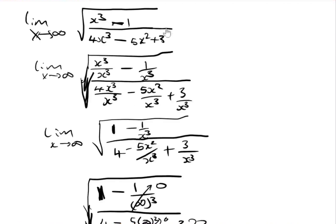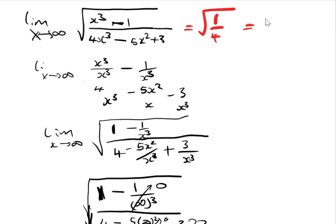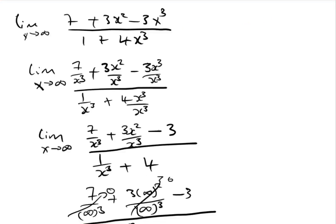For the square root example, you take the square root of the coefficients of the highest power, which is x cubed. The coefficient of x cubed in the numerator is 1 and in the denominator is 4. So the square root of 1 gives 1 and the square root of 4 gives 2, giving 1 over 2 as the answer. For the last example, the highest power is x cubed; the coefficient is minus 3 in the numerator and 4 in the denominator, giving minus 3 over 4. That is how to solve it while writing a multiple choice exam.